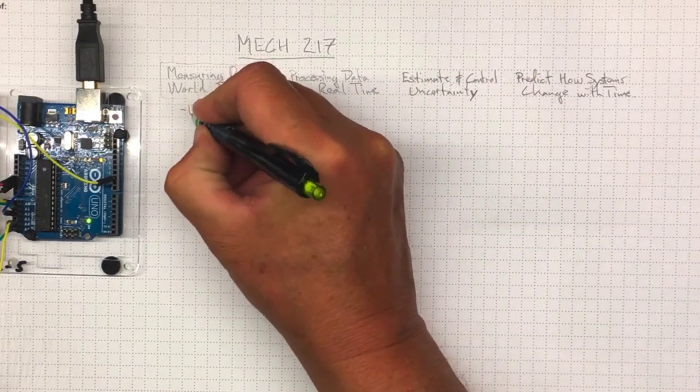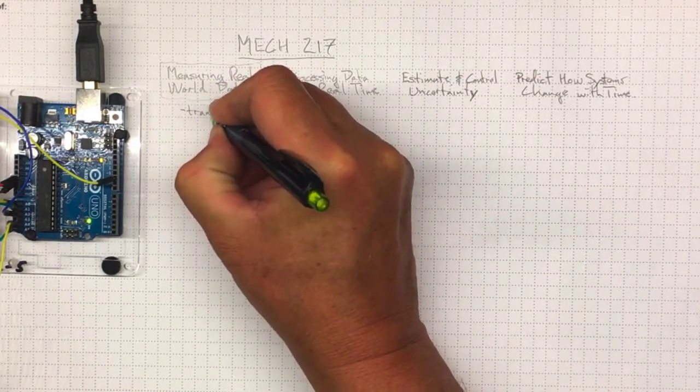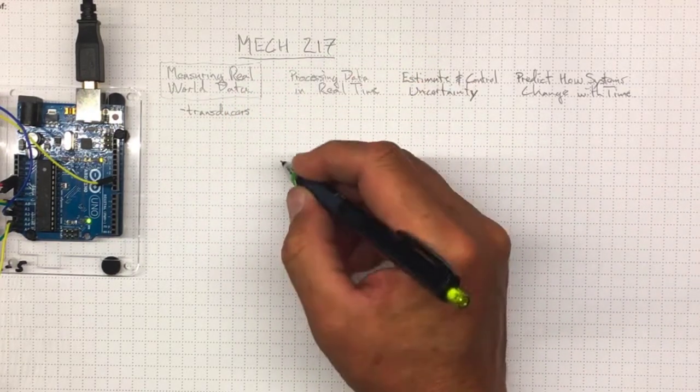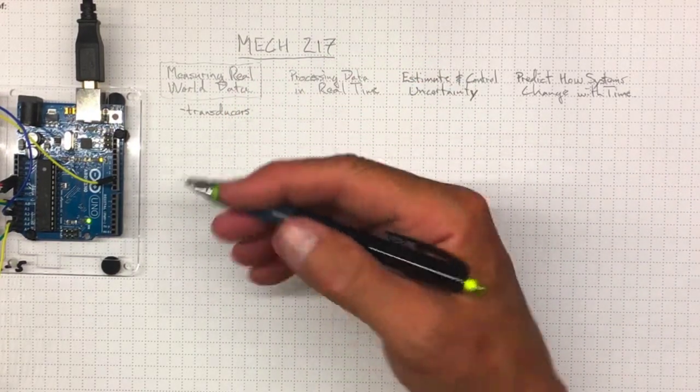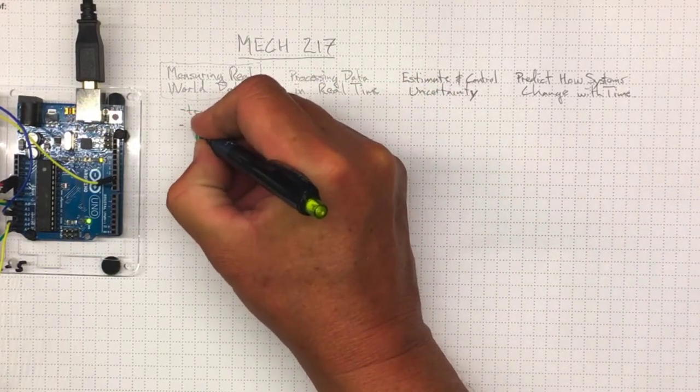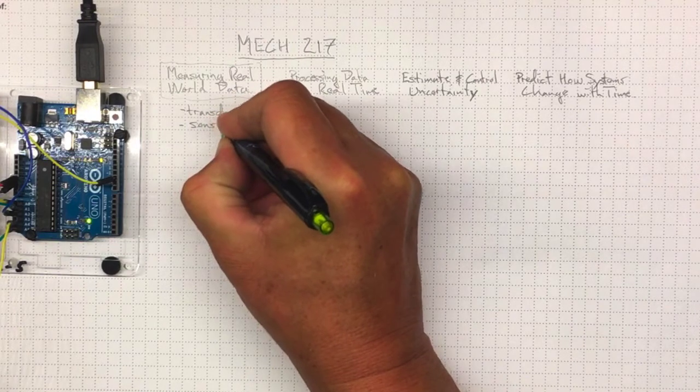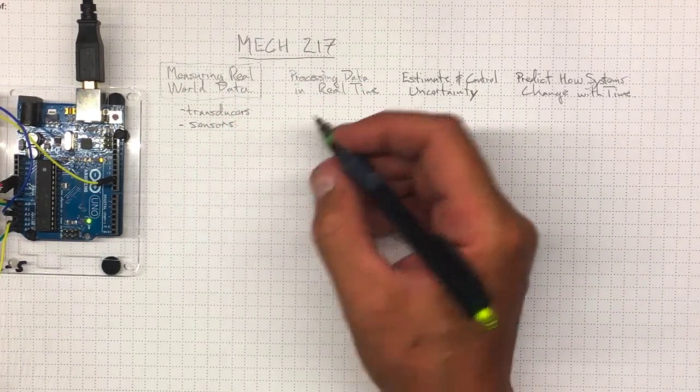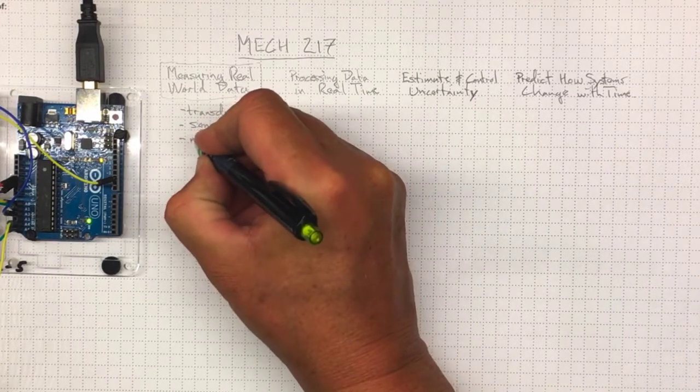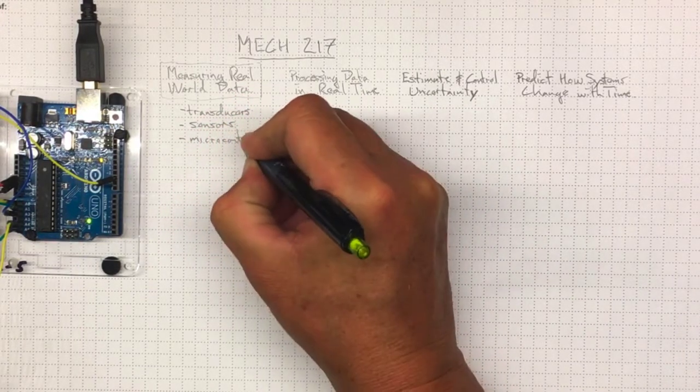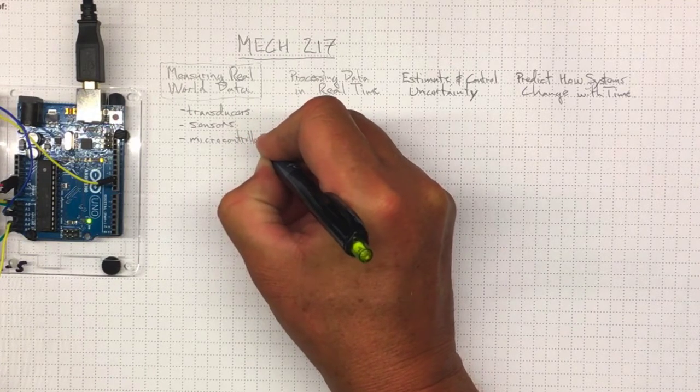So we need to understand about transducers, devices that will translate measurable quantities into typically voltage that we can measure, sensors which may be either a combination of transducers and some circuitry or they may be digital sensors. And we have to put all of that together with microcontrollers because we need our measurement systems to be affordable so that we can build them into our products.